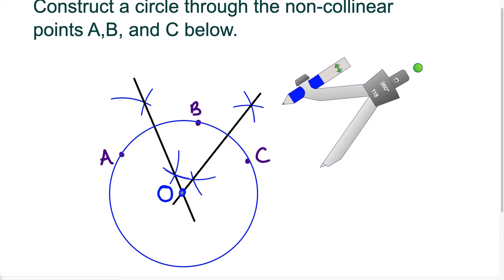But the center O here, when I swing the arc through A all the way around, this circle hits all three points. So this is the construction of the circle that goes through points A, B, and C.